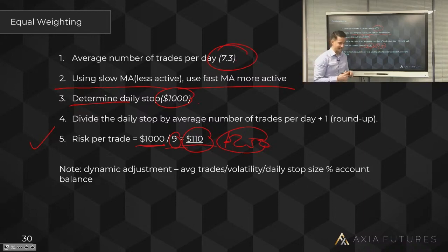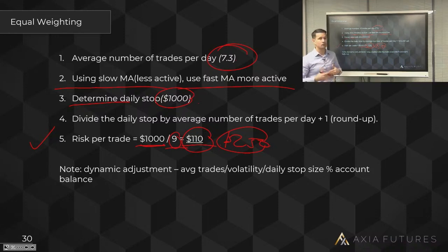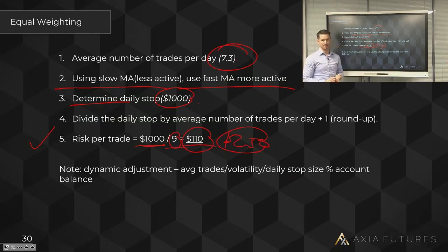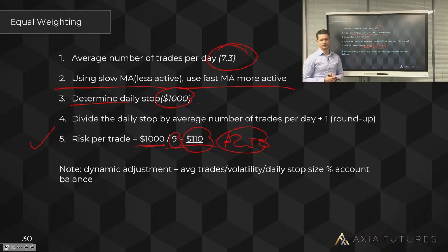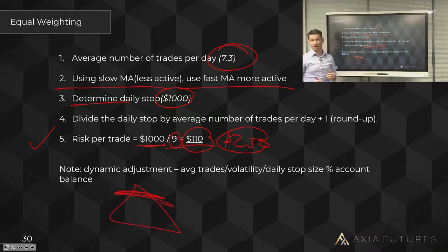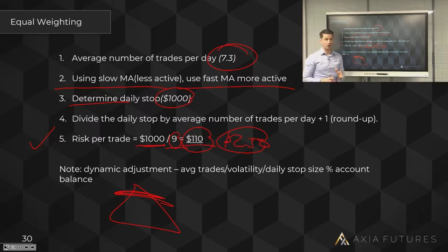A risk management strategy is exactly that: you implement it, leave it for a couple of months, see what it does in terms of eradicating emotion and making everything easier. Let the value of the strategy apply itself. Then, when you've solved this foundational issue of risk management, by all means get clever. For me now, at the top of the pyramid, I can't use equal risk weighting anymore — I need to be more specific about when to use leverage.